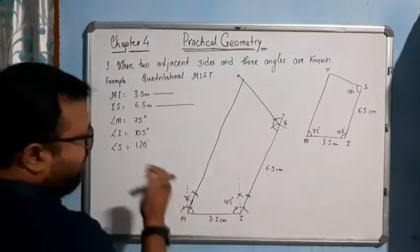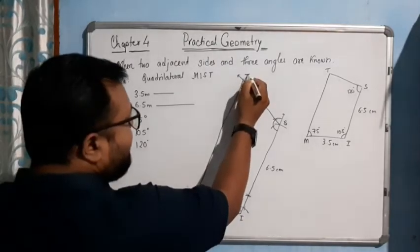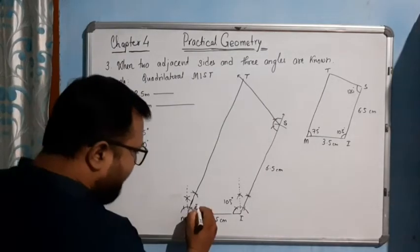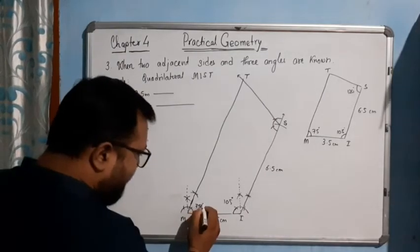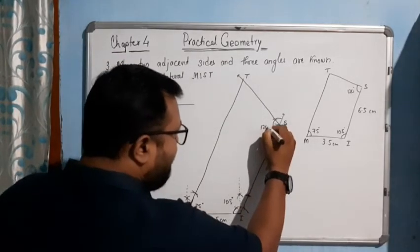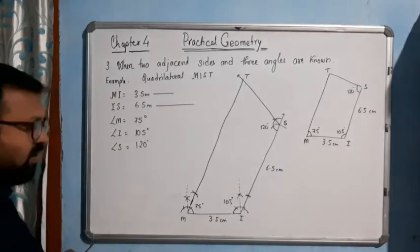So this is your required quadrilateral. This is 75 degrees, and this is 120 degrees.